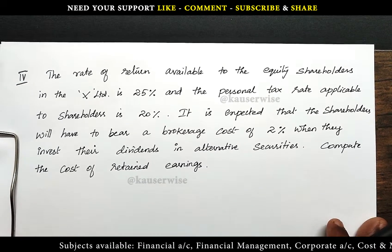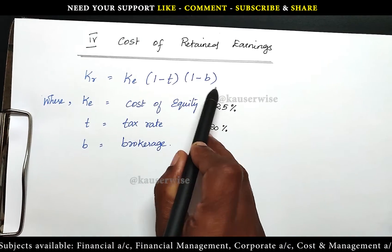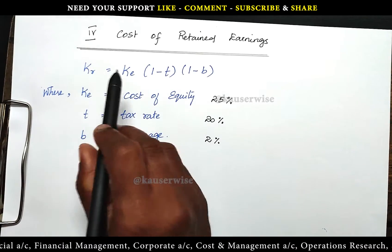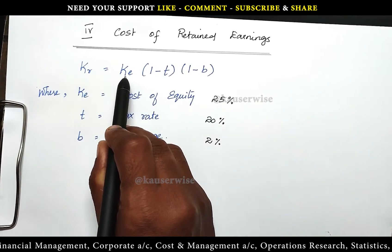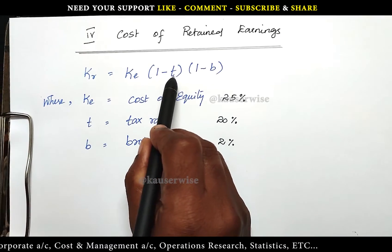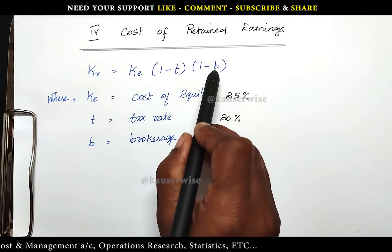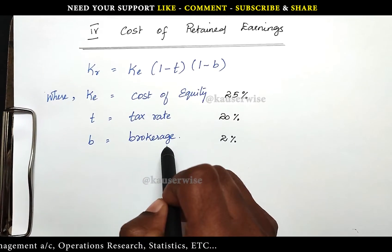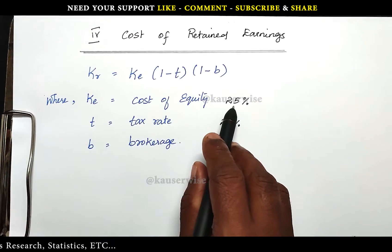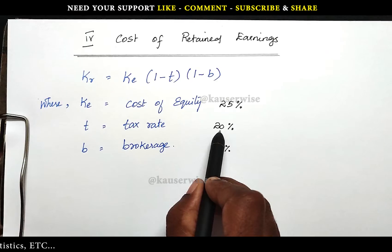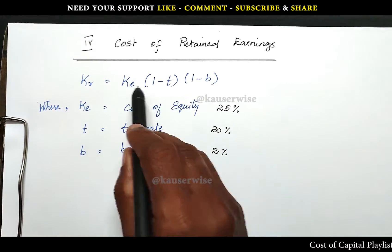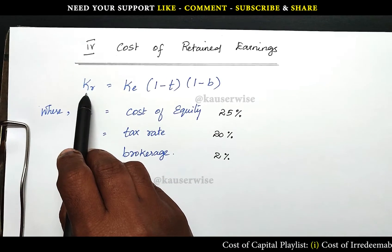Now let's see the solution. This is the formula to find out cost of retained earnings. KR refers to cost of retained earnings, which is equal to KE — where KE means cost of equity — into (1 minus T), where T refers to tax rate, into (1 minus B), where B refers to brokerage. According to the given information: cost of equity is 25%, tax bracket is 20%, and brokerage is 2%.